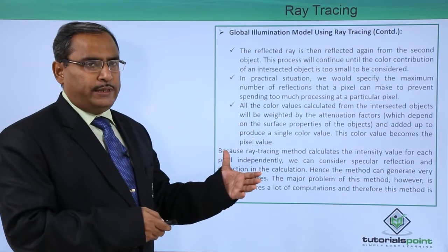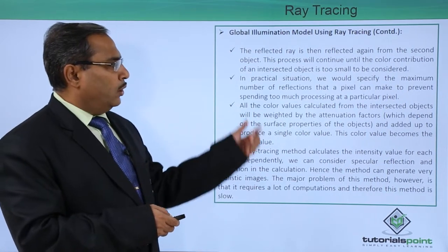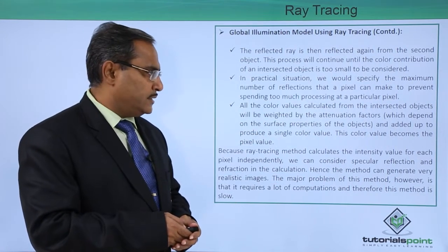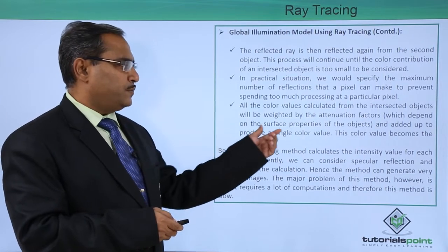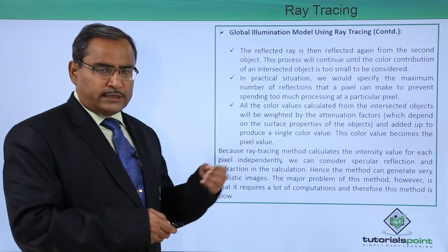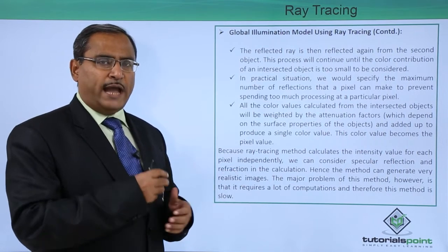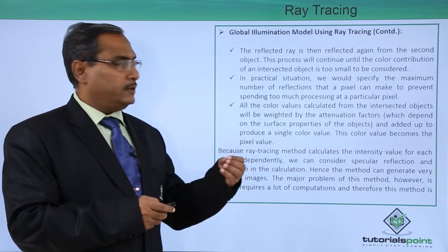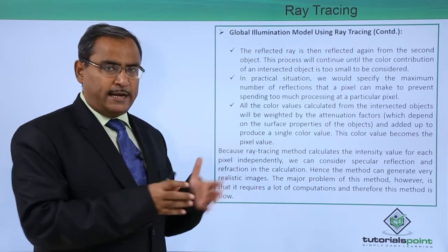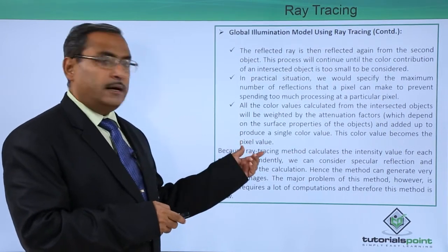We can have some upper bound up to which we perform calculations; otherwise there will be excessive computation. All the color values calculated from the intersected objects are weighted by attenuation factors, which depend on the surface properties of the objects, and then added together to produce a single color value. This color value becomes the pixel value.